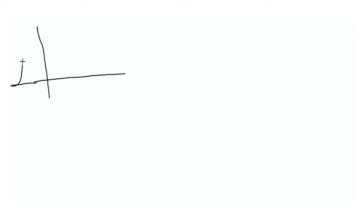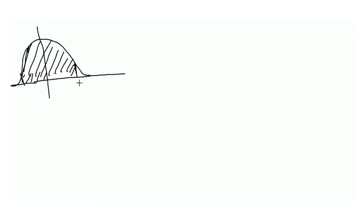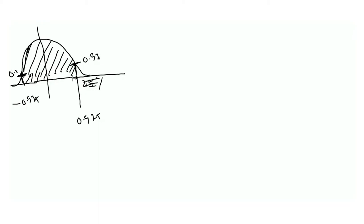Let's understand what we are talking about. The z-score is distributed around zero, and you want a 95 percent confidence interval. That means there's a 5 percent error, so you have 2.5 percent on each side. This value corresponds to 0.975 on both sides. So you want to find what value of z gives you 0.975, and that comes out to be 1.96.